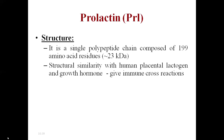Polypeptide hormones are composed of amino acids, so they are protein in nature. Prolactin is a single polypeptide chain composed of 199 amino acid residues. Previously studied hormones like TSH, LH, and FSH are two polypeptide chains, whereas prolactin is composed of a single polypeptide chain containing 119 amino acid residues, with a mass of approximately 23 kilodaltons.